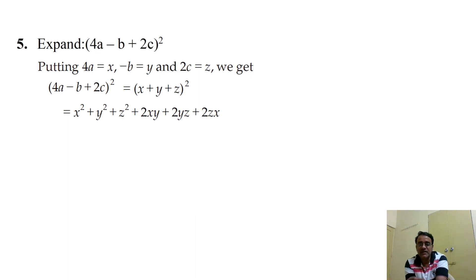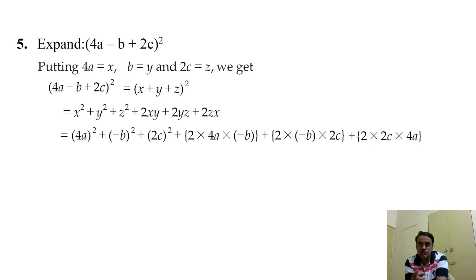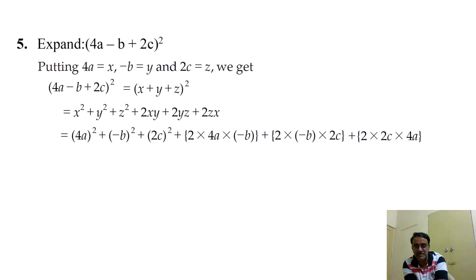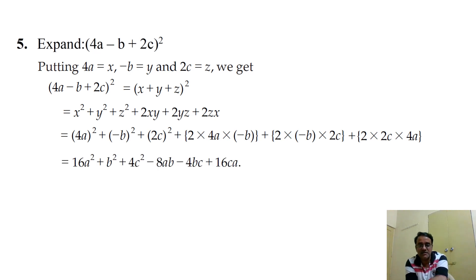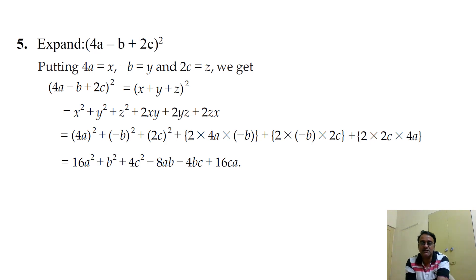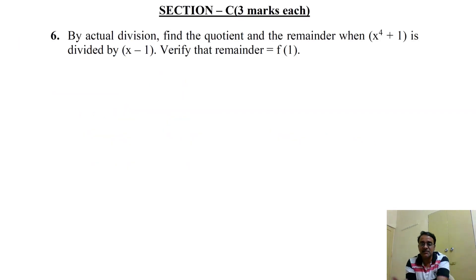Substituting x = 4a, y = -b, z = 2c wherever they appear in the formula, the final answer is 16a² + b² + 4c² - 8ab - 4bc + 16ca.